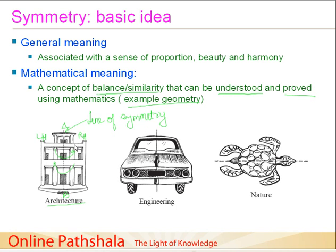You can also call the line of symmetry an axis of symmetry. The second example shows the front portion of a car. Again, there is a line dividing the car into two parts, and folding either side over the other makes them completely coincide — so this figure also exhibits symmetry. Similarly, in nature, if you draw a horizontal line through the middle of a tortoise and fold the bottom to the top or the top to the bottom, you get a perfectly coinciding figure. This is another example of symmetry.